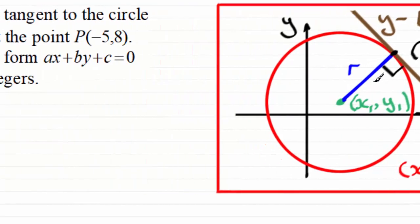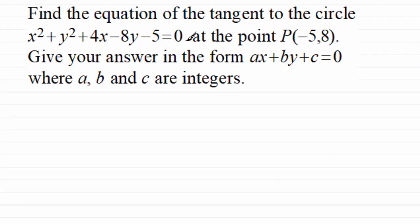And I've got an example here where we've got to find the equation of a tangent to the circle x squared plus y squared plus 4x minus 8y minus 5 equals 0 at the point P with coordinates minus 5, 8. And we've got to give our answer in the form ax plus by plus c equals 0 where a, b, and c are integers.